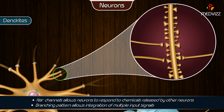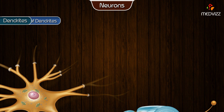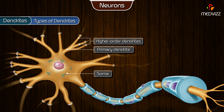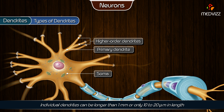The dendrites have small knobby projections called dendritic spines. Types of dendrites: primary dendrites are those that extend directly from the soma. Higher-order dendrites are daughter branches extending from a more proximal branch, where proximal refers to closeness to the soma. Individual dendrites can be longer than one millimeter or only 10 to 20 micrometers in length.